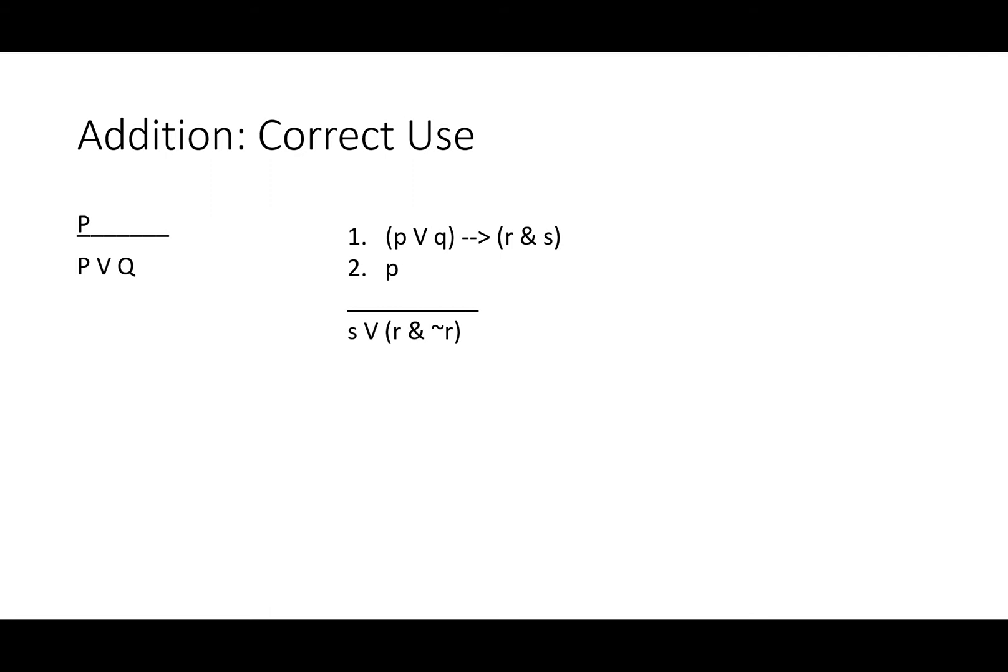Once we know that we've got P, our conclusion S or R and not R is another good sign that we're going to need addition, since R and not R can't possibly both be true. So P or Q, we'll add that right now, and that will sure enough allow us to do modus ponens with R and S. We'll simplify out S, and we won't worry about the other R because we can just add the whole thing, R and not R, right onto S. And now we've proved our conclusion.